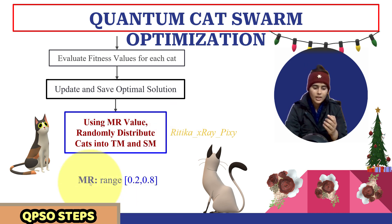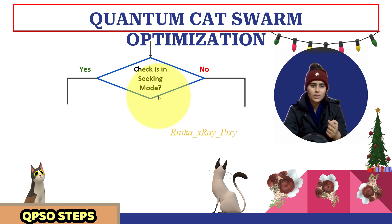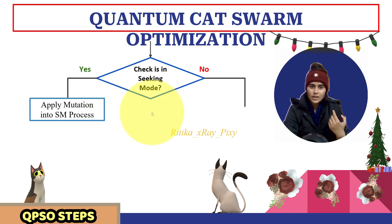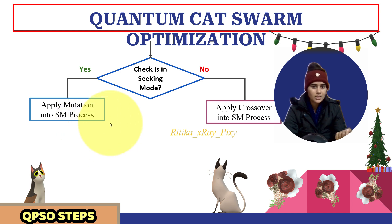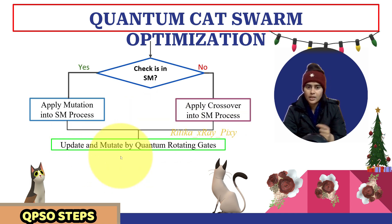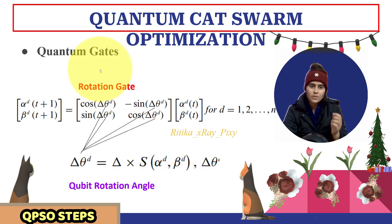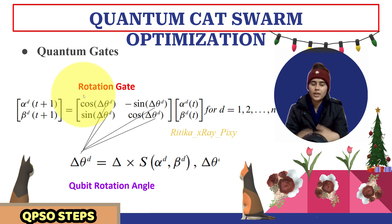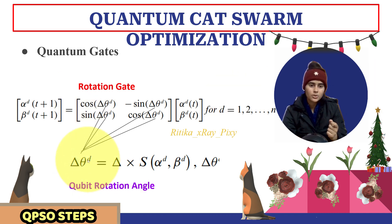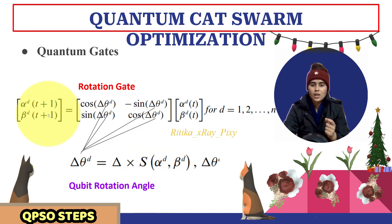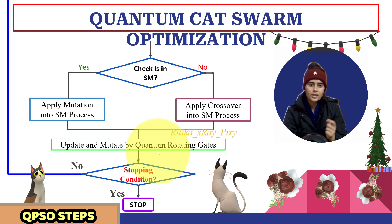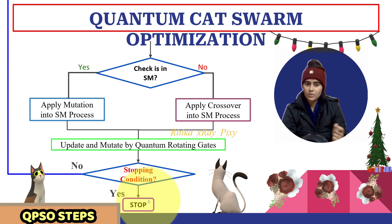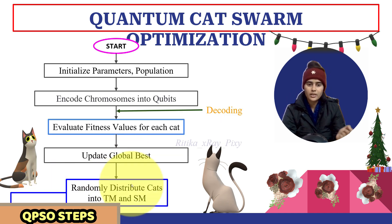The mixture ratio value should be small, as in real life cats spend most of their time in resting or alert mode. Next, we check whether the cat is in seeking mode or tracing mode. If the cat is in seeking mode, we apply mutation into the seeking mode process. If the cat is not in seeking mode, we apply crossover into the seeking mode process. Then we update and mutate using quantum rotation gates. Here we use the quantum rotation gate to update the final position — this is the qubit rotation angle used to update the agent's position in the search space.